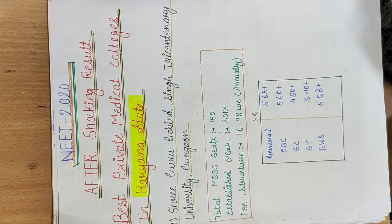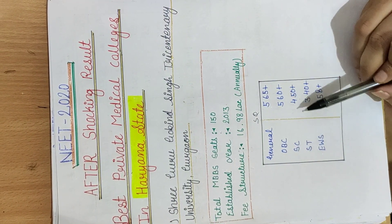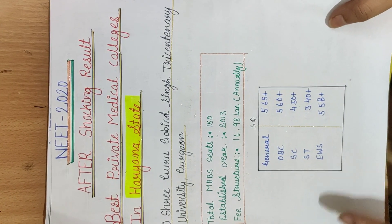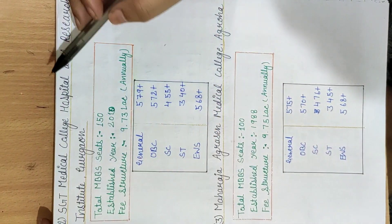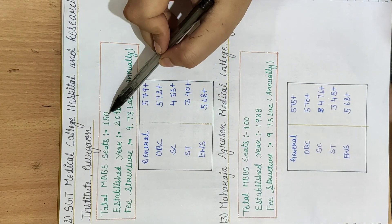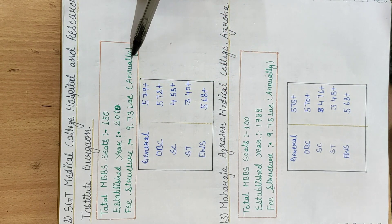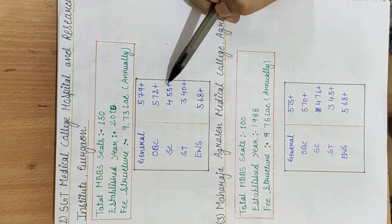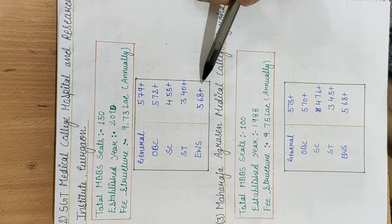So for general 565 plus, OBC 560 plus, SC 450 plus, ST 340 plus, EWS 558 plus. Next private medical college is SGT Medical College Hospital and Research Institute, Gurugram. Total MBBS seats are 750 and its establishment year 2010. Its fee structure is 9.73 lakh annually. Cutoffs are general 579 plus, OBC 572 plus, SC 455 plus, ST 340 plus, and EWS 568 plus for state quota.